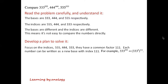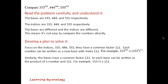Each number can be written as a new base with index 111. For example, 333 to the power of 555 equals 333 to the power of 5, all to the power of 111. Similarly, the bases also have a common factor of 111, so each base can be written as the product of a number and 111. For example, 555 equals 5 times 111. We'll use the power rule and the product rule for exponents.